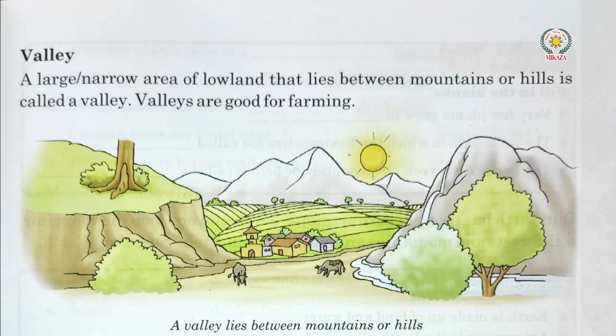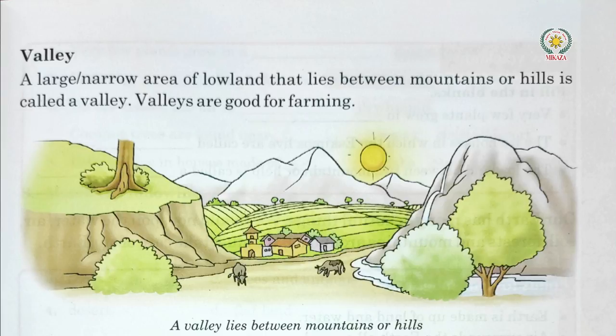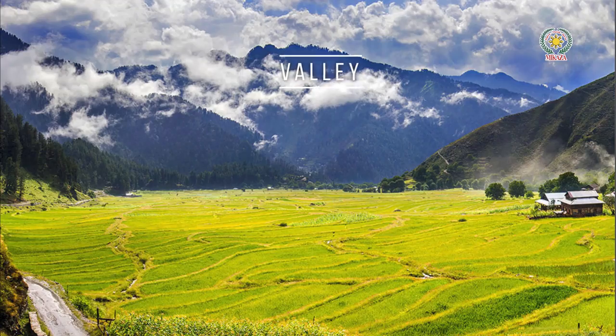A large narrow area of low land that lies between mountains or hills is called a valley. Valleys are very good for farming and agriculture, and the weather in valleys is also pleasant.